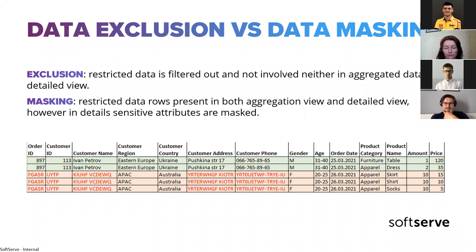For example, if a manager wants to group by customer address to see how many customers are from a given region, customer region and customer country columns — like Eastern Europe, APAC, Ukraine, Australia — are not masked: they have original values and can be used in summary aggregation and UI filtering. If a column is masked, then grouping by it would not be possible. This depends on the requirements and agreement with business users about which attributes are sensitive and which should be used in the summary.